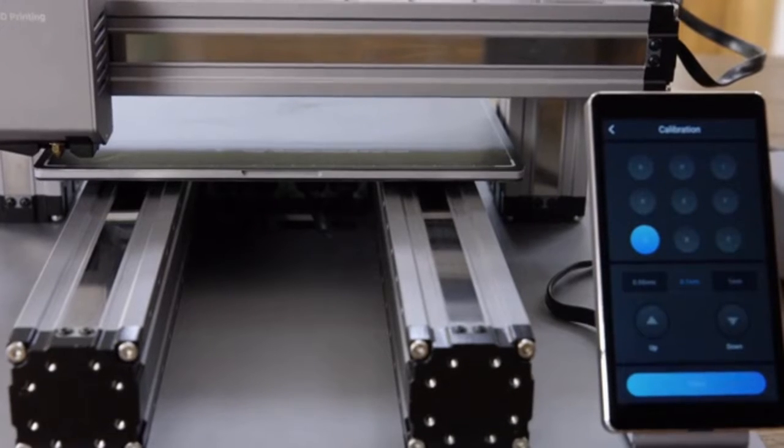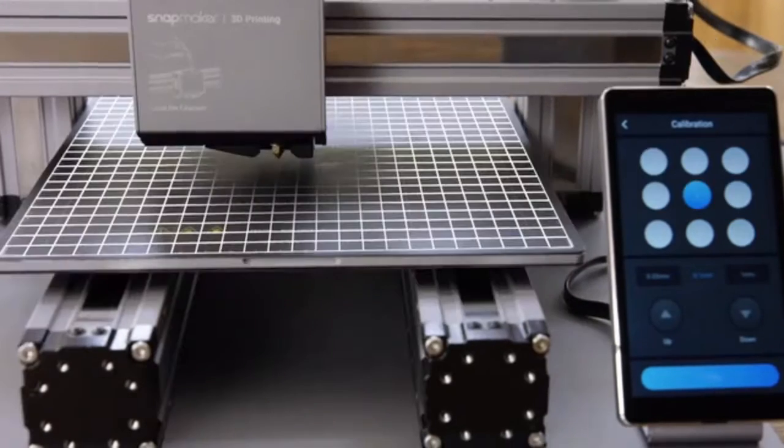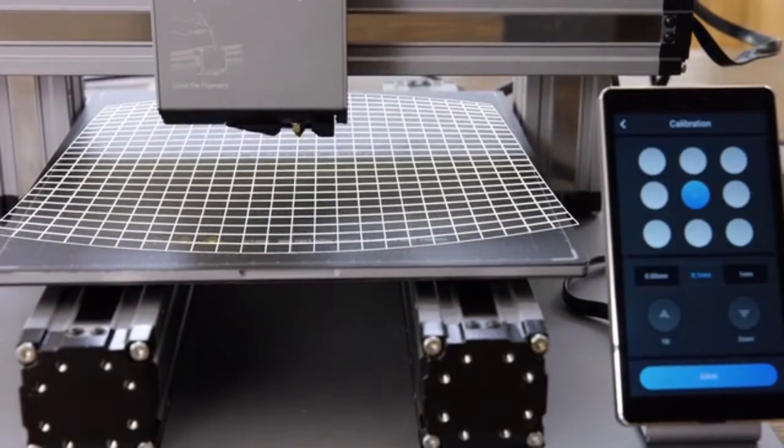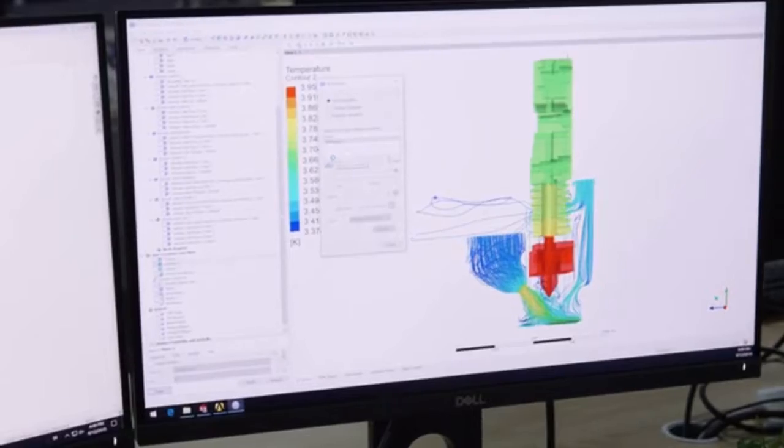The new Snapmaker includes an automatic bed leveling feature that ensures you print on a level bed every time. The cooling system is redesigned to cool the print in the most efficient way possible.